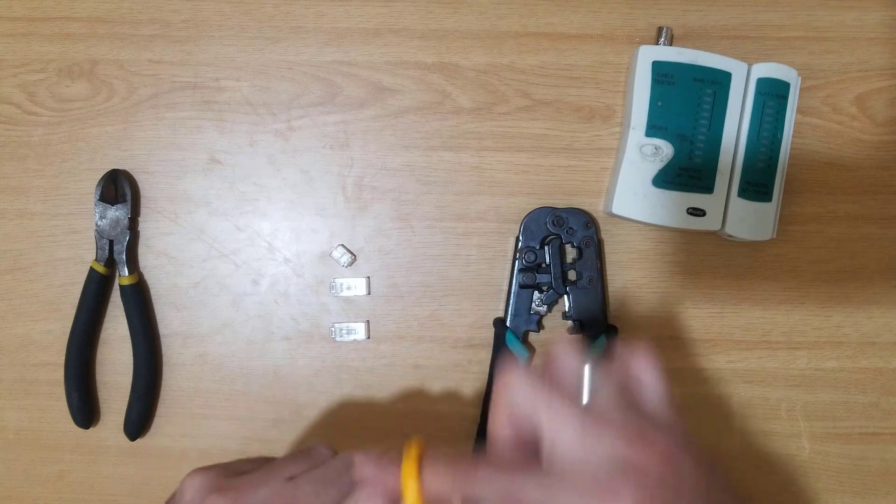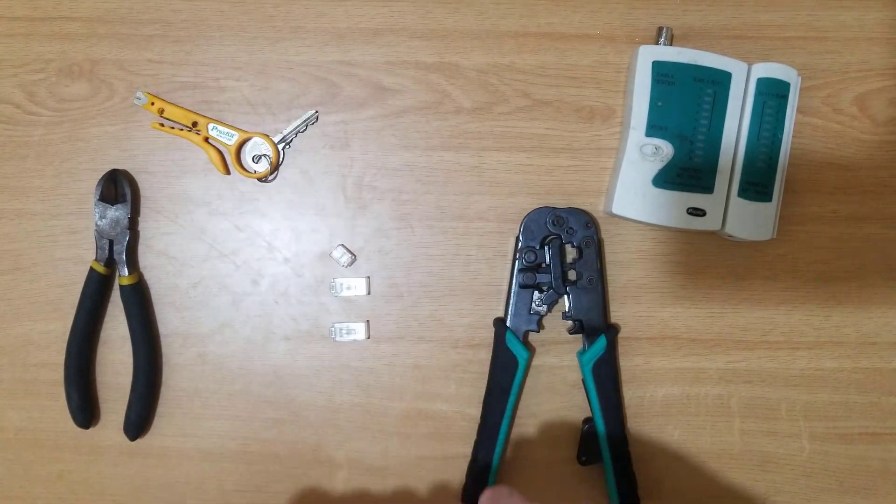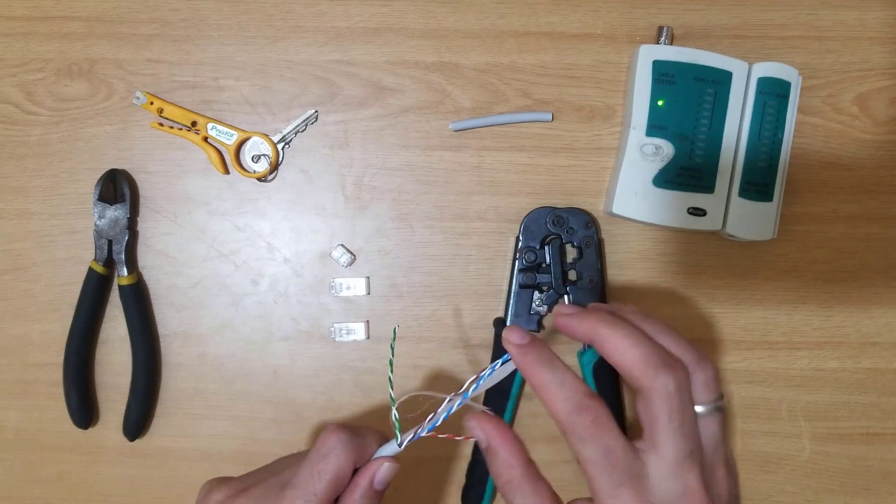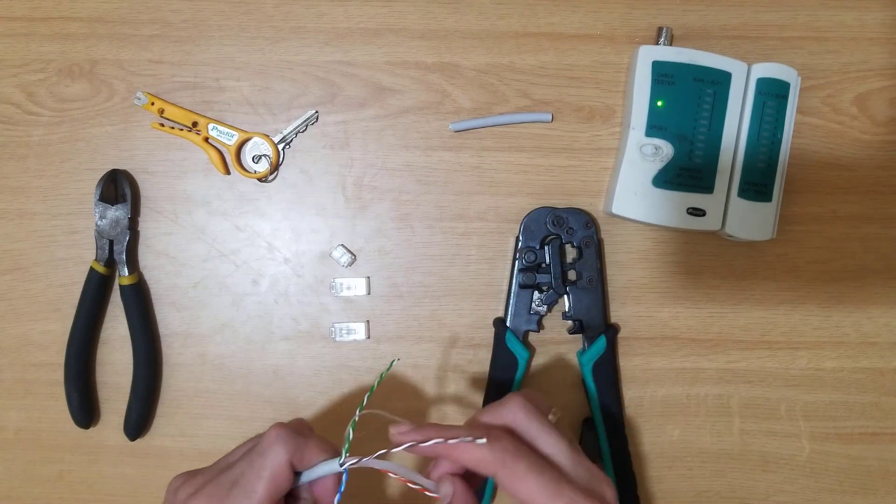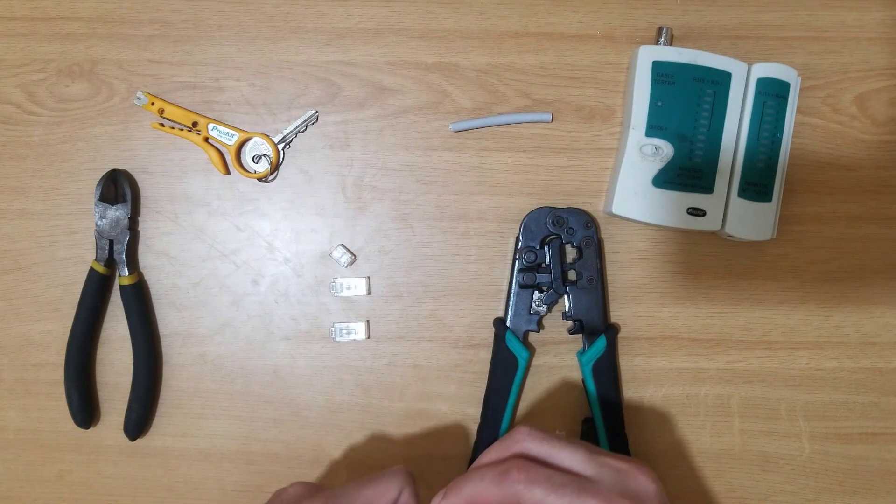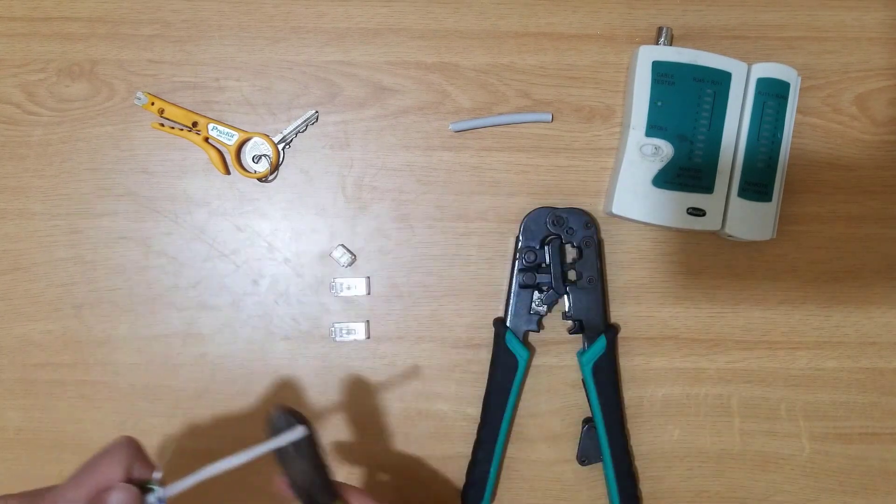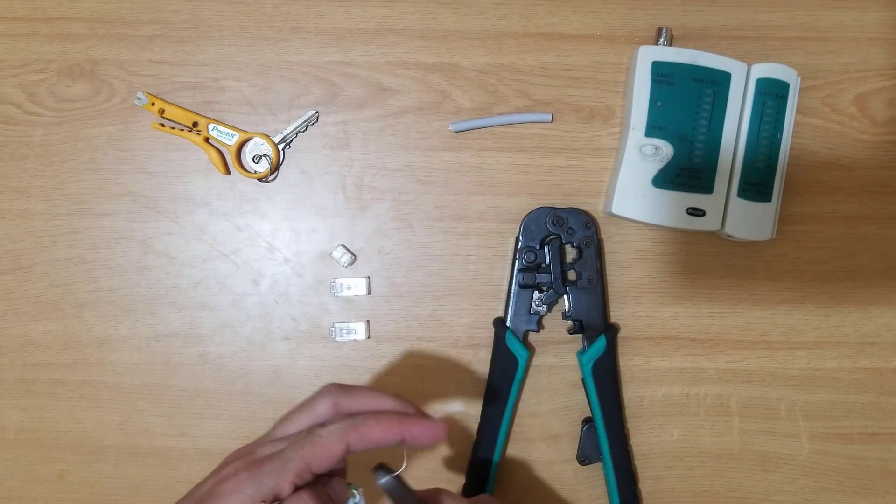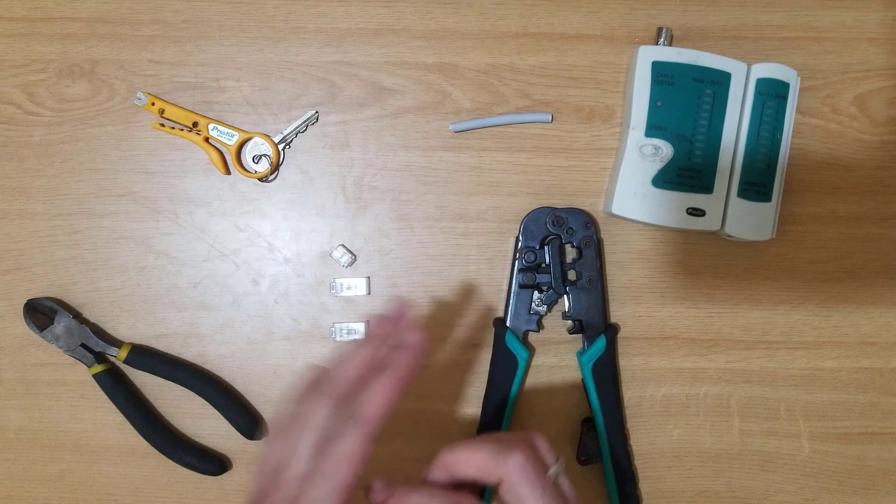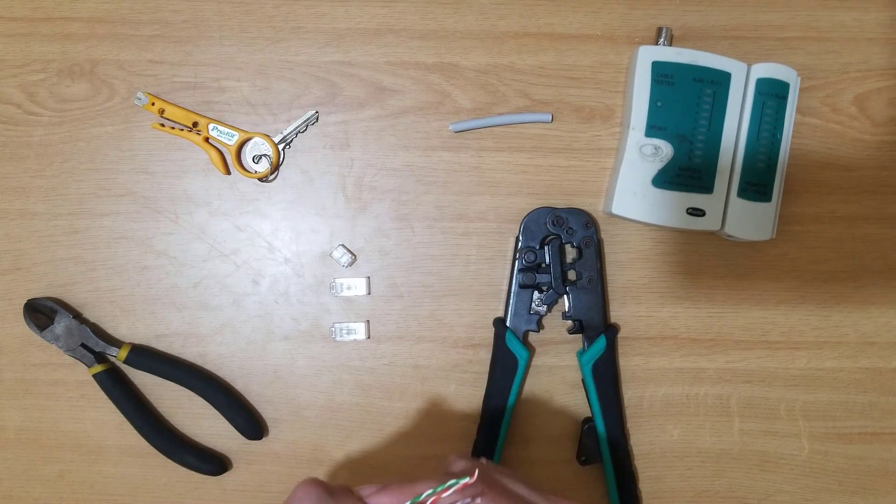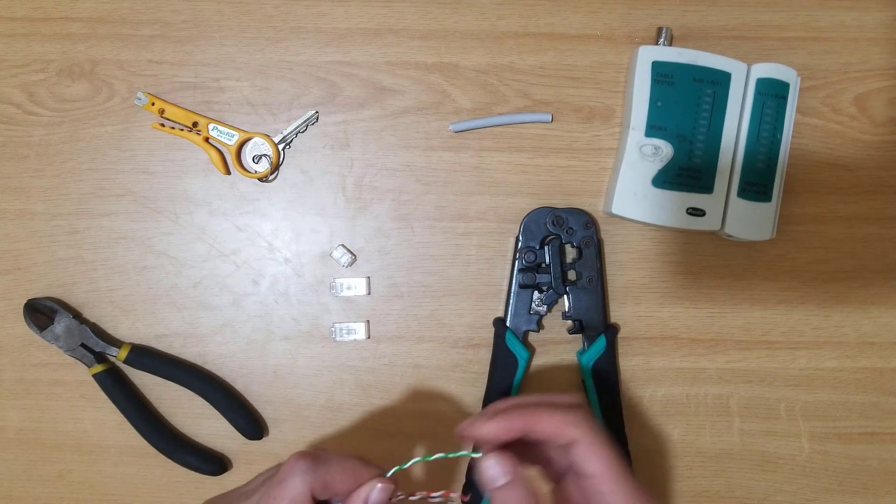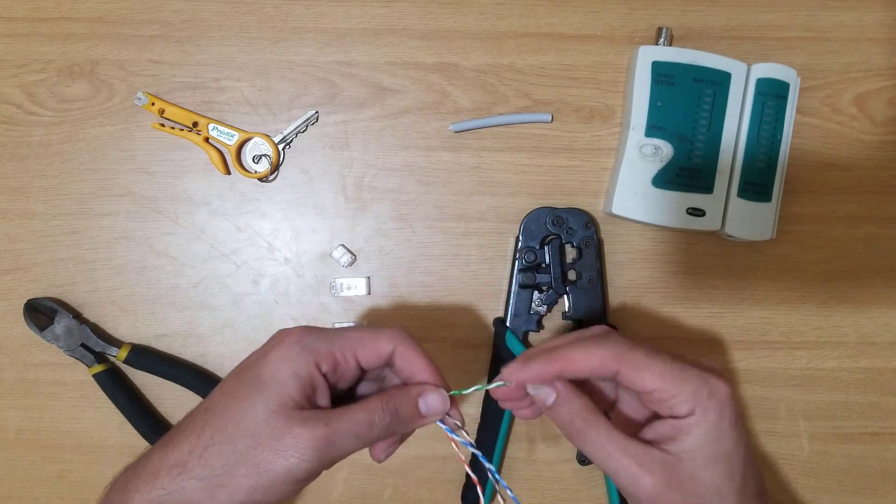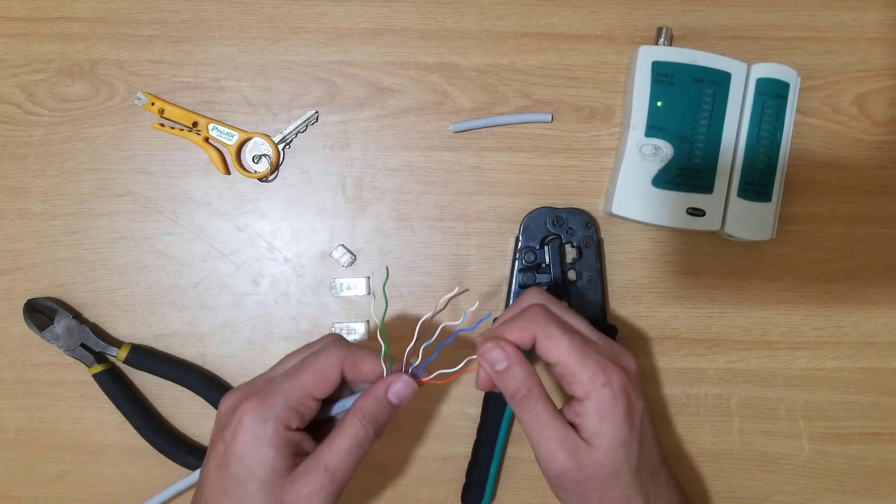Use the stripper to strip the cable. You can see here there are four pairs inside, total eight cables. I will cut the plastic, then we have to separate all the pairs. Here I separate all the four pairs.